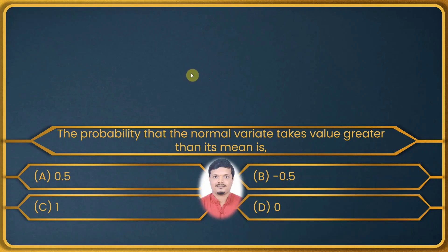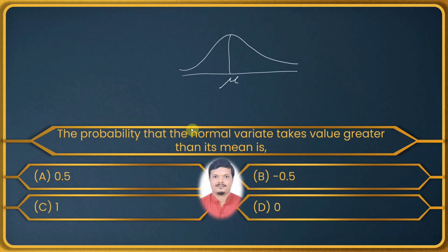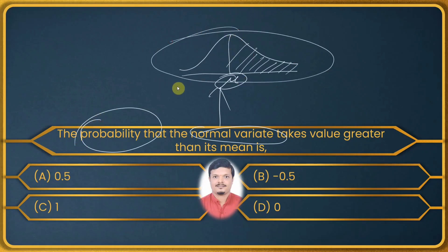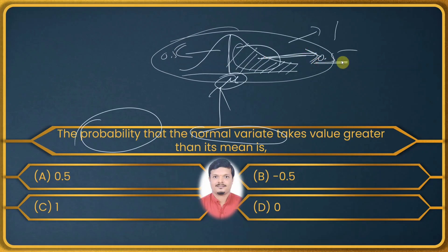This question is from theoretical distributions, specifically normal distribution. In the normal distribution, mean, median, and mode coincide at mu. The probability that the normal variate takes a value greater than its mean — greater than mu — is exactly half of the total probability of 1, which gives 0.5. The same answer would apply for less than the mean.